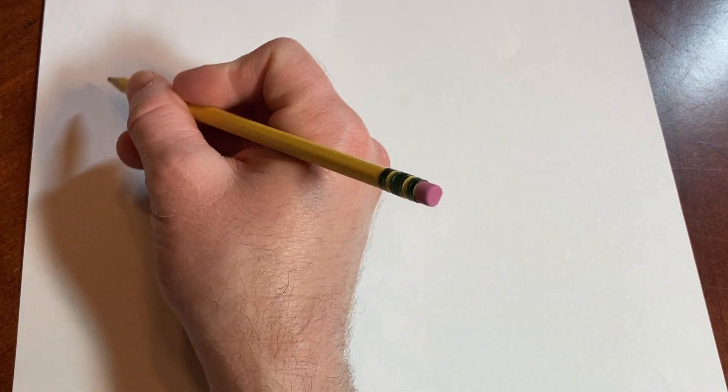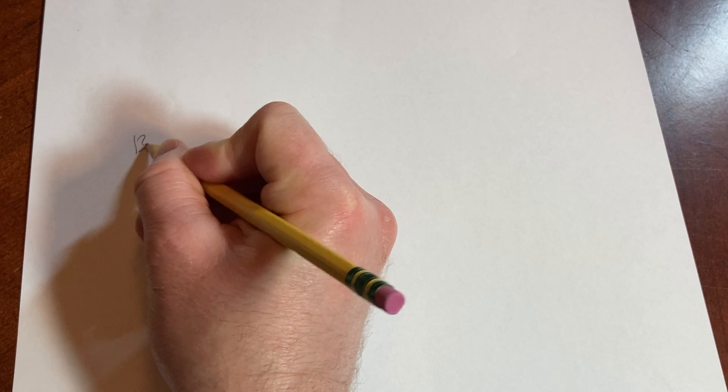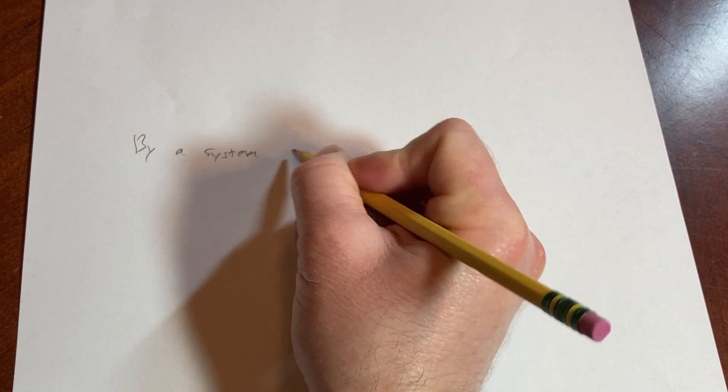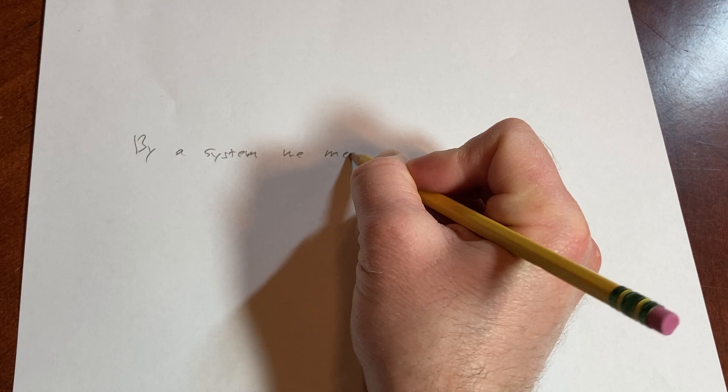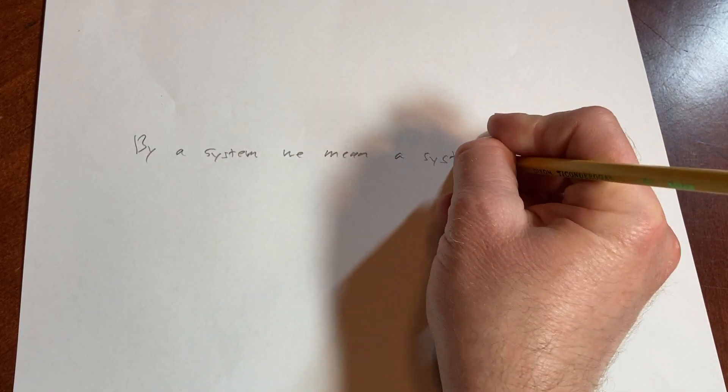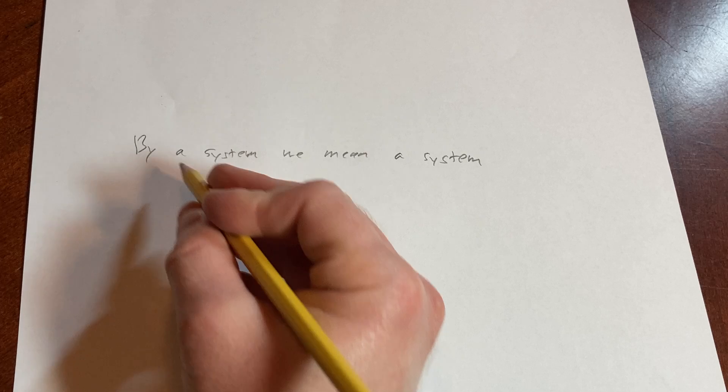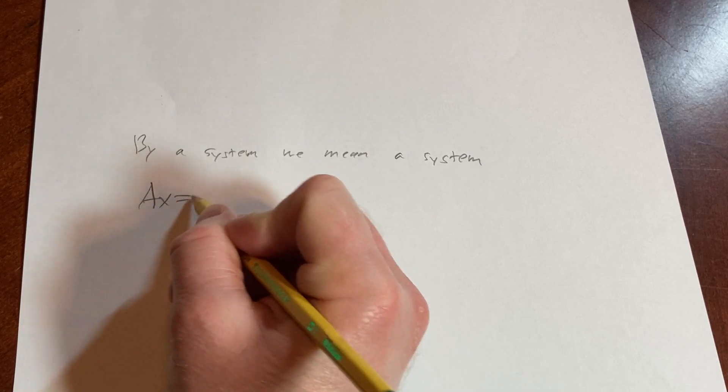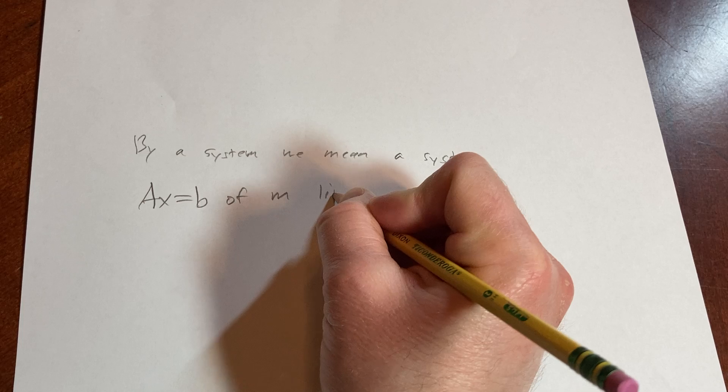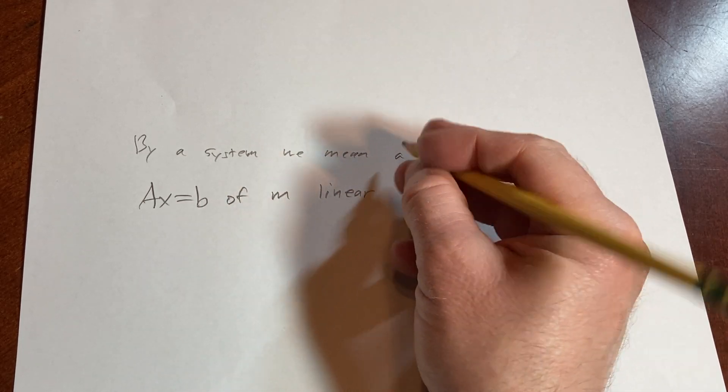By a system, we mean a system AX equals B of M linear equations.